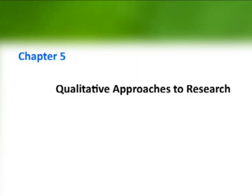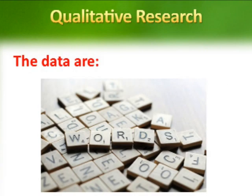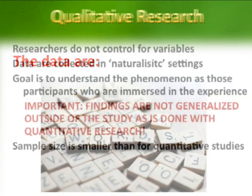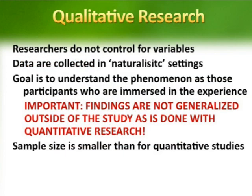Chapter 5 is going to be concerned with the types of qualitative approaches to doing research. You remember from our previous discussion that qualitative research involves data that are words. In qualitative research, researchers do not control for variables. Data are collected in naturalistic settings, and the goal is to understand the phenomenon as those participants who are immersed in the experience. It's very important to remember that findings are not generalized outside of the study.